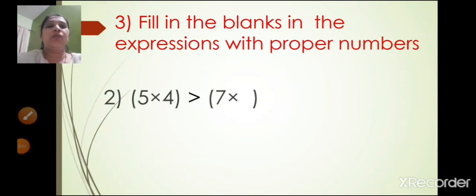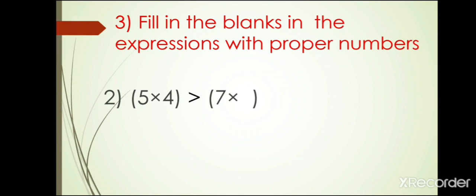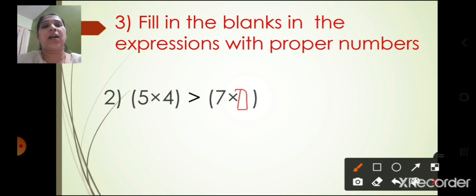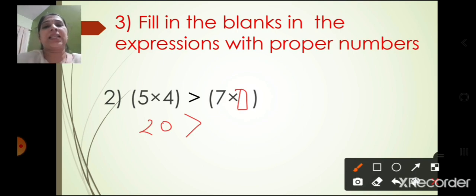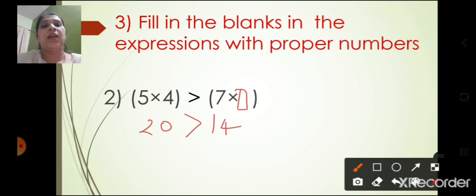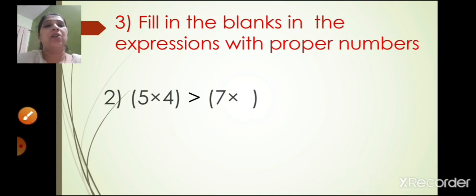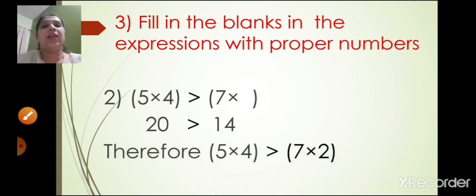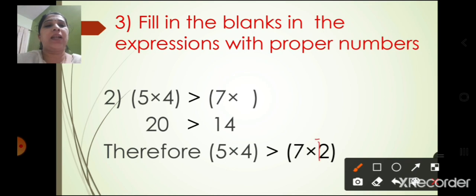The second one: 5 into 4 is greater than 7 into box. Now 5 fours are 20. So the box must give a product smaller than 20 in the 7-times table. Seven ones are 7, seven twos are 14, seven threes are 21 — which is larger than 20. So we take 7 twos, which is 14. Therefore 5 into 4 is greater than 7 into 2. The answer in the box is 2.